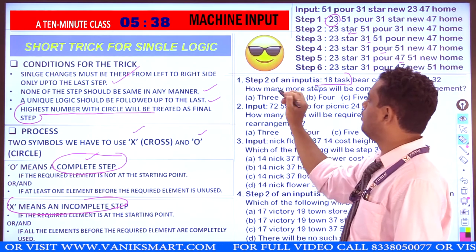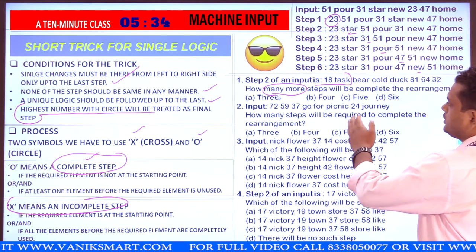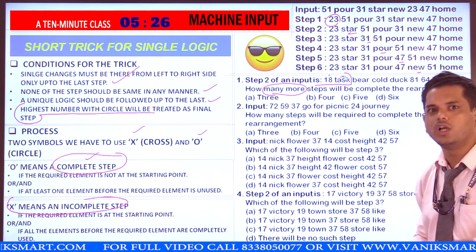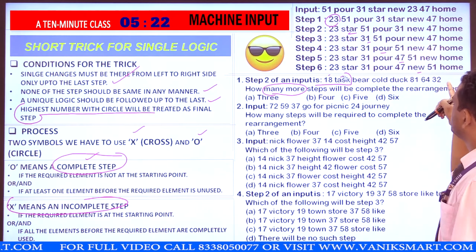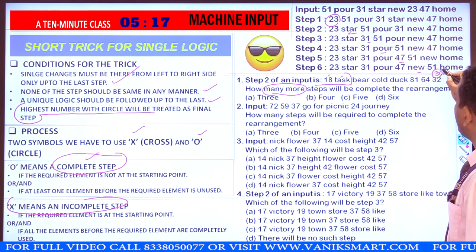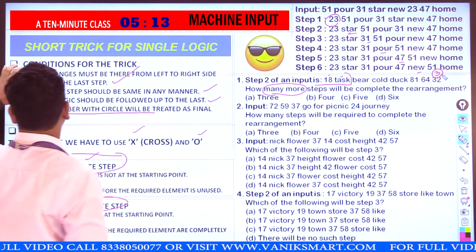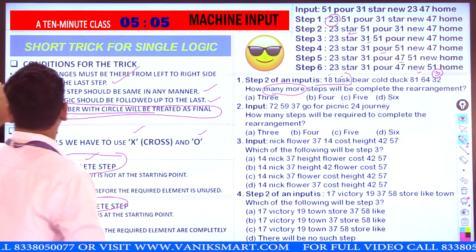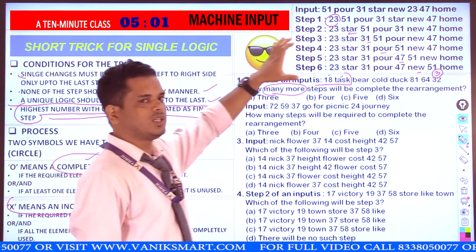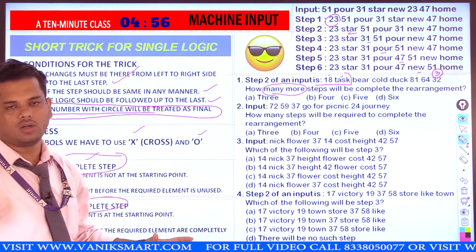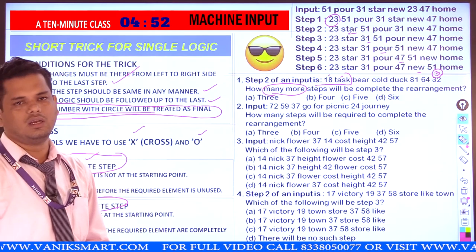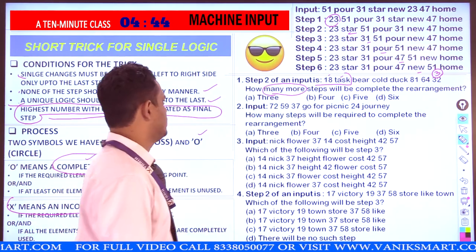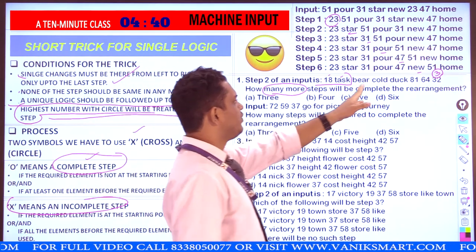Step two दिया गया है किसी भी input का, और हमको निकालना है how many more steps to complete the arrangement. Friends, step 2 खत्म हो चुका है। अब जो plan होगा वो step 3 के लिए होगा: lowest number, highest alphabet, then lowest number among all items — lowest number is 32. So 32 will be at step number 3, और इसको हम circle कर देंगे। Condition number 1 और condition number 2 apply होंगी।